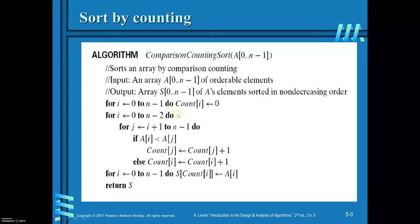Once you complete this step and get the count for all elements of the array, the final step is to copy the elements of array A onto a new array S based on the count values. For that, vary the loop from 0 to n minus 1 and set S[count[i]] equal to A[i]. Then finally return the sorted array S.